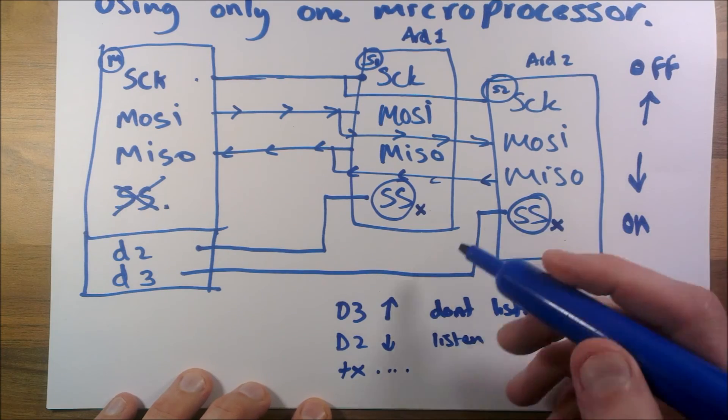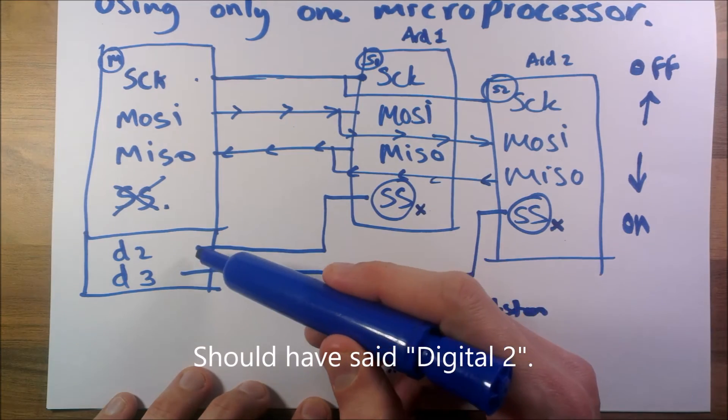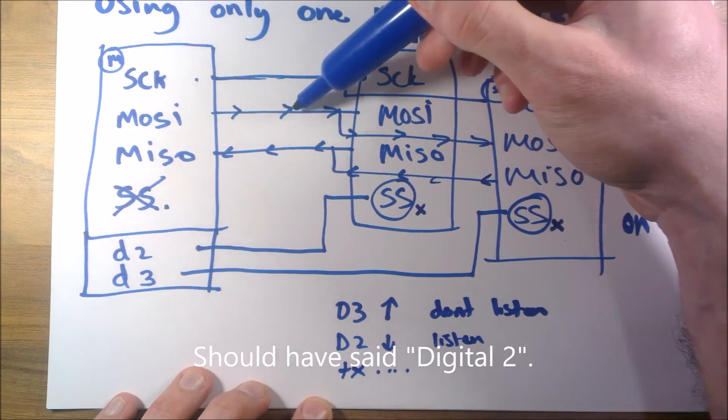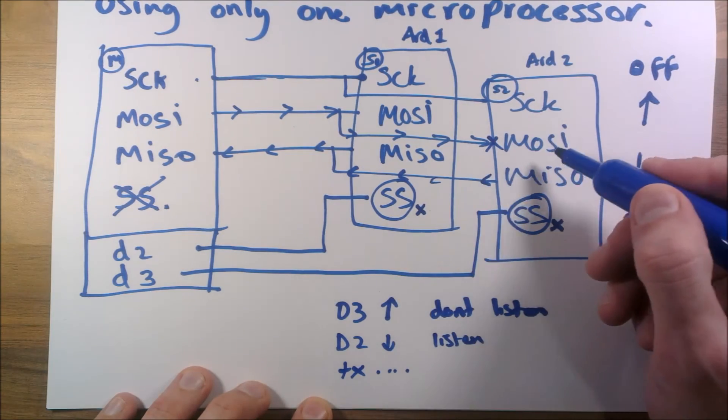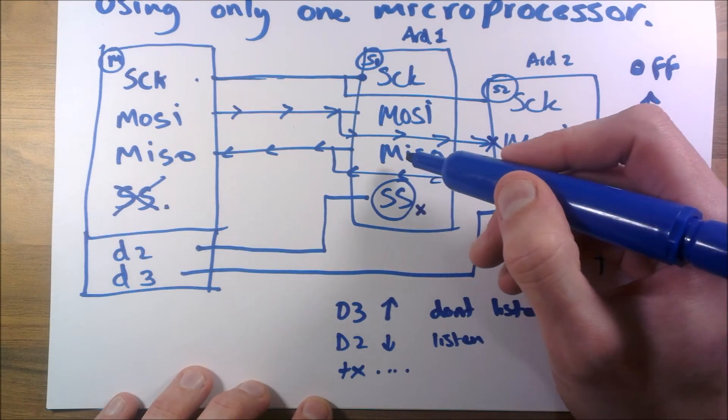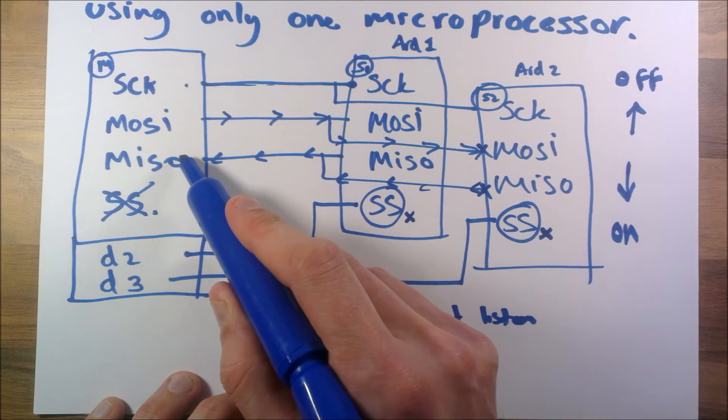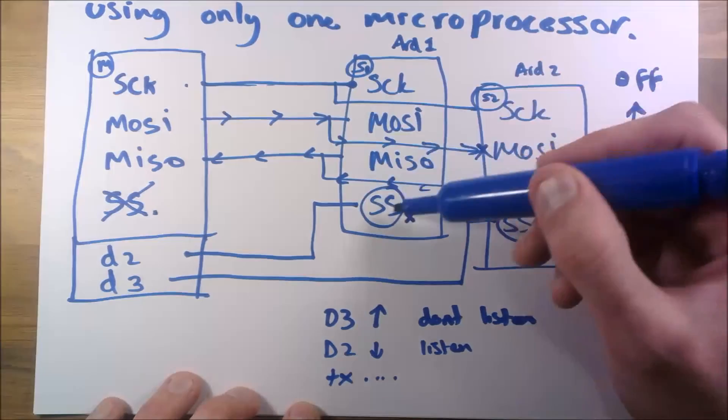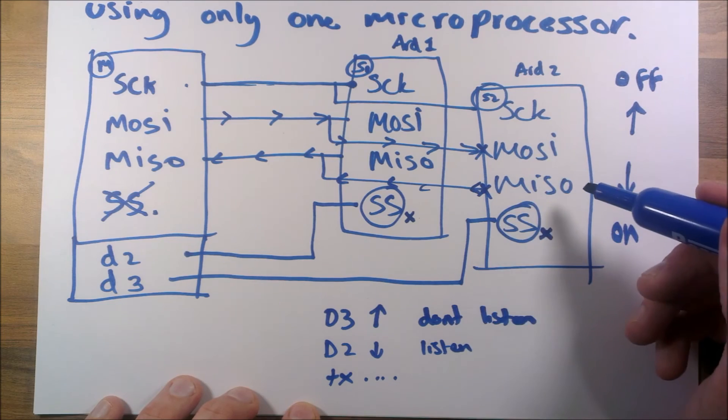We transmit data to Arduino one. Because we're transmitting data here, master out, the data would go all the way along here and all the way along here. But this one is deaf, it doesn't hear. This one does hear, so then this one can process its data and send something back. Then when this responds it gets the data back and we're good. We know it's this one that's received the data and transmitting data back to us. This one is deaf and dumb.